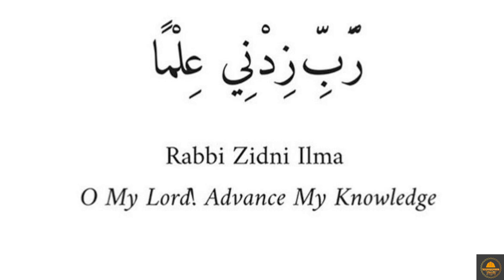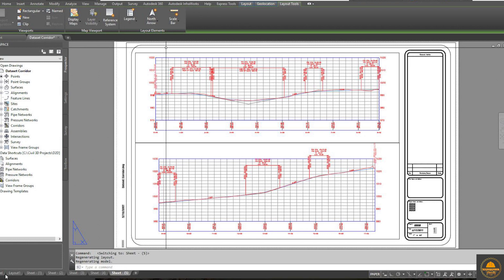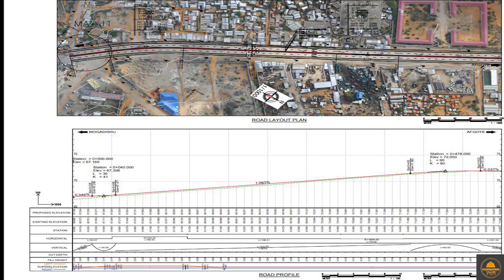Welcome back to the Server Designing and Civil 3D video series by Murad Farooq. In today's tutorial, we will explain how to create plan and production sheets. We will cover how to create plan and profile on one sheet, how to enter your company names and all details in your drawings, and how to print. If you're not subscribed to our channel, please subscribe and press the bell icon for more informative videos.